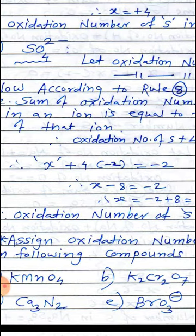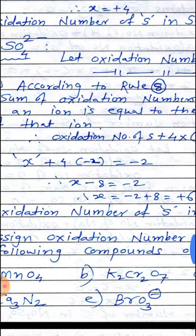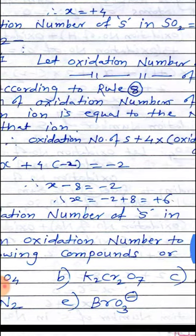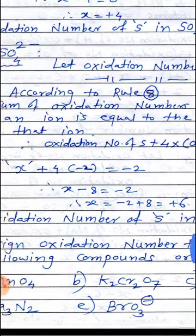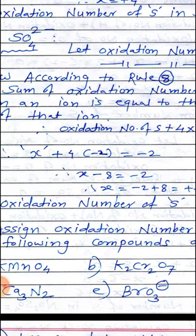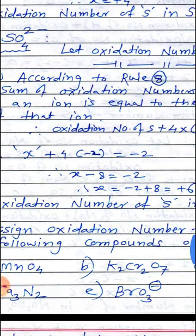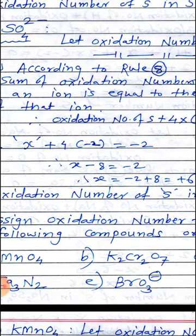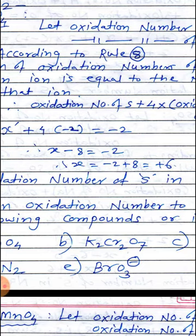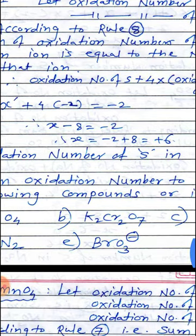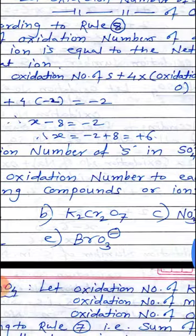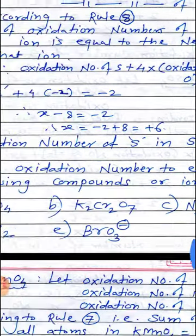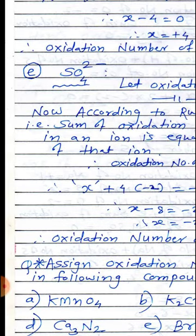SO₄²⁻ has a 2 minus charge, so the net charge equals minus 2. The equation is: oxidation number of S plus 4 into (oxidation number of oxygen) equals minus 2. Therefore x plus 4 into (−2) equals minus 2, so x minus 8 equals minus 2, therefore x equals minus 2 plus 8, giving plus 6. The oxidation number of S in SO₄²⁻ equals plus 6.